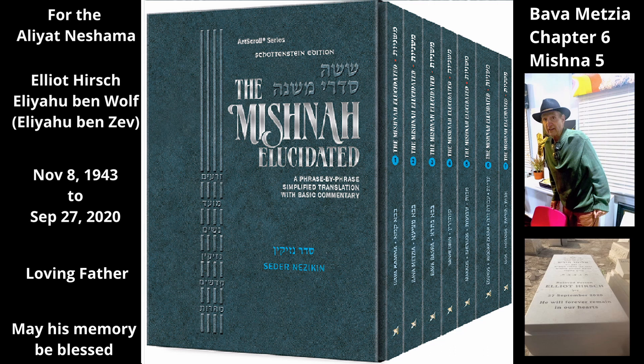In the next case, the renter did not add to either the weight or the volume of the agreed-upon load. If a person rents a donkey and agrees to carry a lessech — a unit of volume — of wheat, but instead carries a lessech of barley, and the donkey is injured, the renter is exempt. Although he did not obey the owner's instructions, he did not increase the volume and in fact made the load lighter. Therefore, he is not at fault for the animal's injury.